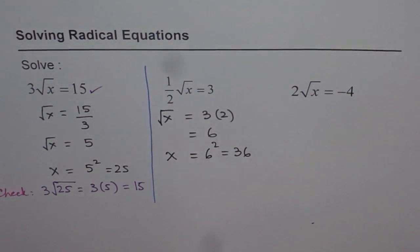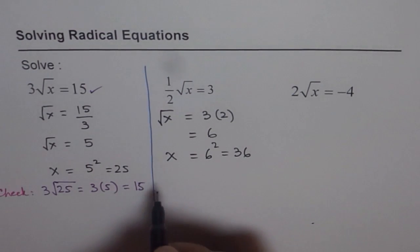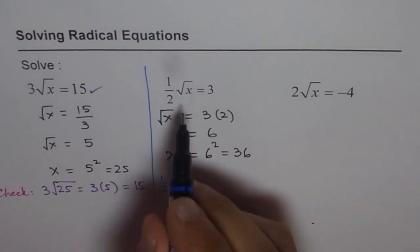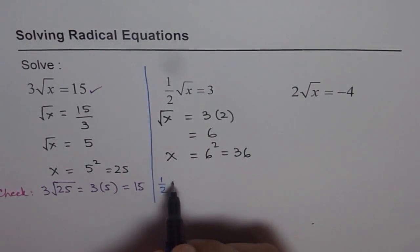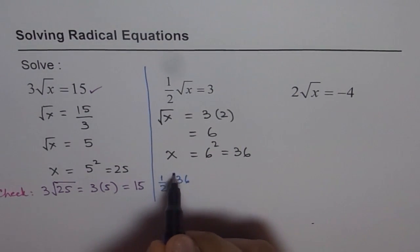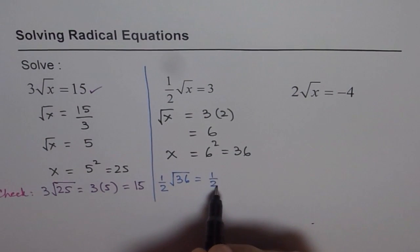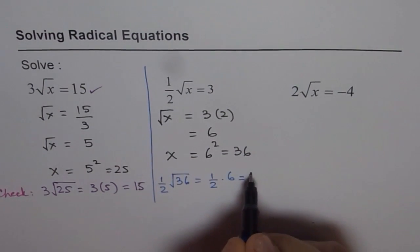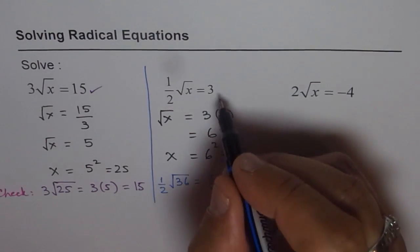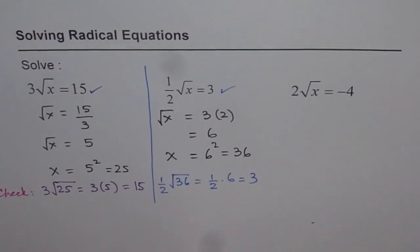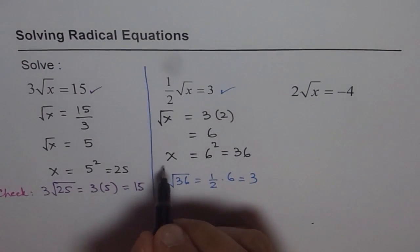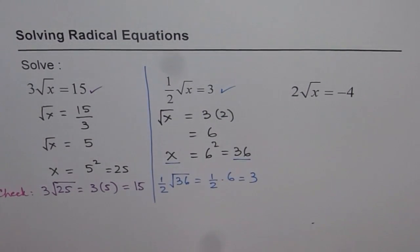Now it's good practice, always, in radical equations, to check your answer. So let's check this answer. If you want to check it, you will substitute the value on the left side of the equation. Half times √36, which is half times 6, and that is indeed equal to 3. So it works. So that is the correct answer.